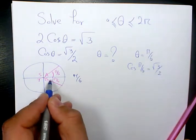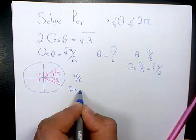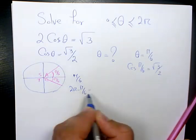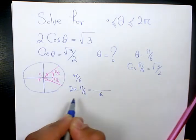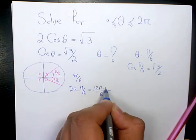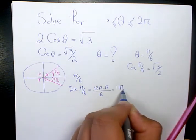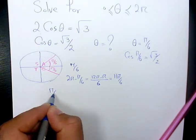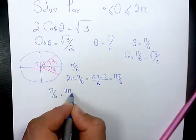And the other answer is going to be 2 pi minus pi over 6. So one answer is pi over 6. The other one is 2 pi minus pi over 6, which will be 12 pi minus pi, 11 pi over 6. So we have two answers, pi over 6 and 11 pi over 6.